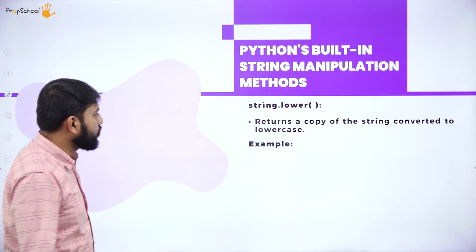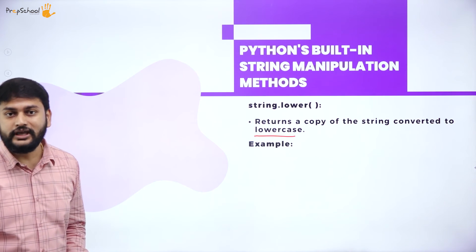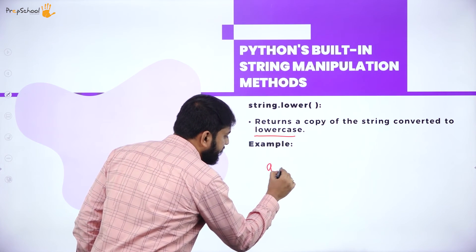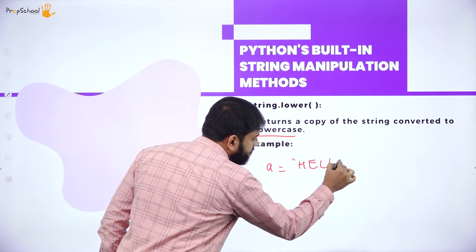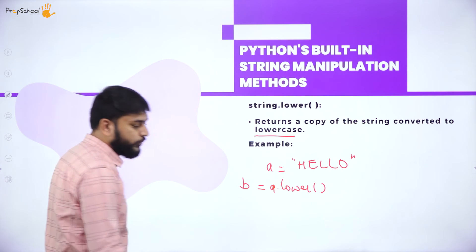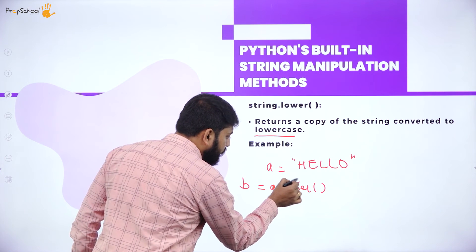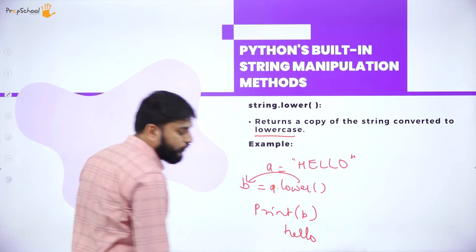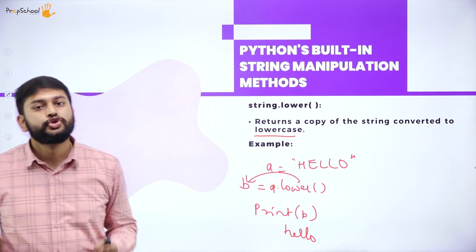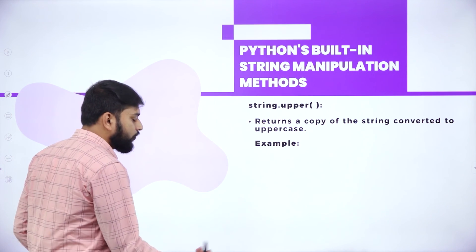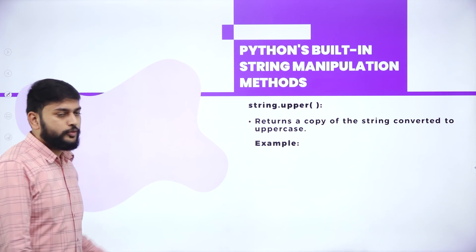The lower() method returns a copy of the string converted to lowercase. For example, if a = 'HELLO', then b = a.lower() and printing b gives 'hello' — all characters are converted to lowercase. Similarly, upper() converts all characters into uppercase.